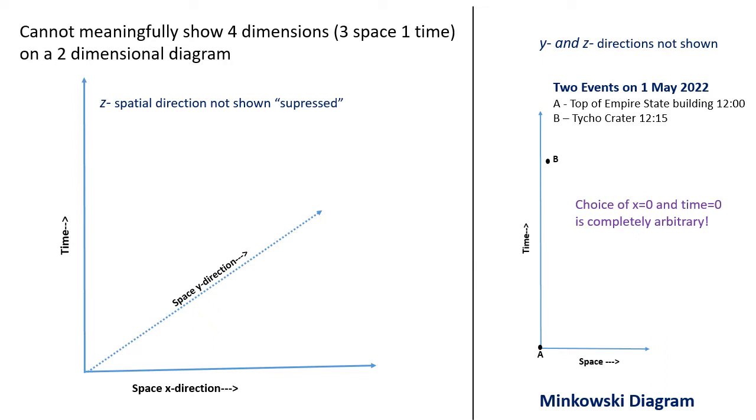In this diagram, we've chosen the x-axis origin to be the top of the Empire State Building. And again, the origin of the time axis is completely arbitrary. We've just chosen it to be 12 o'clock UTC on the 1st of May.